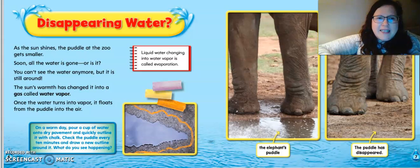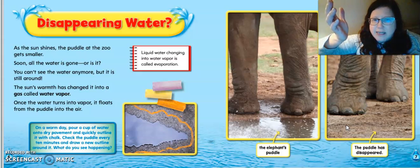Disappearing water. As the sun shines, the puddle at the zoo gets smaller. Soon all the water is gone. Or is it? You can't see the water anymore, but it's still around. The sun's warmth has changed it into a gas called water vapor. Once the water turns into vapor, it floats from the puddle into the air. So you can see here that the elephant had a puddle and then it disappeared. This might happen to you on a rainy day. It's sunny outside, it rains and there's a puddle in your yard, and then all of a sudden you don't see it anymore. Well, it's not really gone.